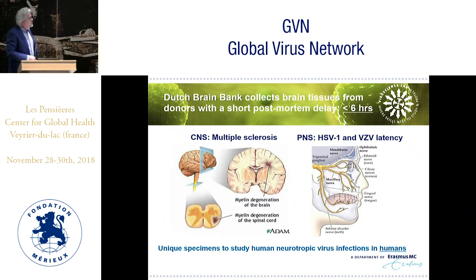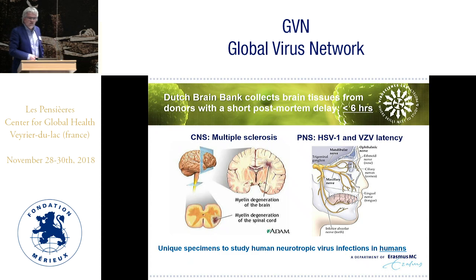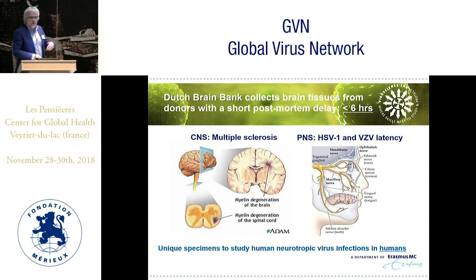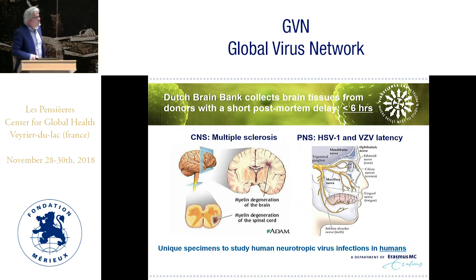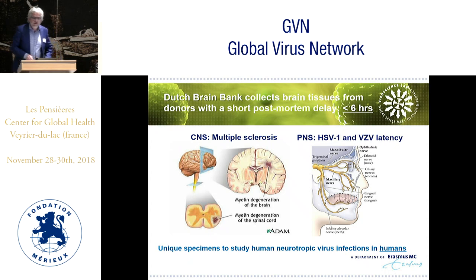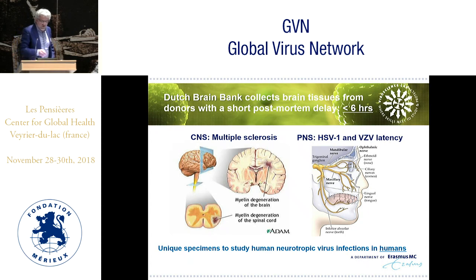The most important thing is that if we want to understand these diseases, we have to go back to the patient — humans. Brain materials can be obtained within 24 or 48 hours, but these tissues are damaged due to hypoxia and necrosis and are not ideal. In the Netherlands we set up an infrastructure, the Dutch Brain Bank, which enables us to get these tissues within six hours of death. This is really unique material to study virus-host interactions.